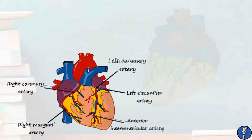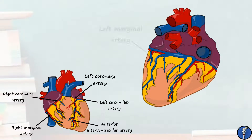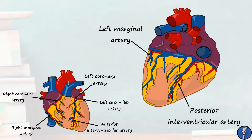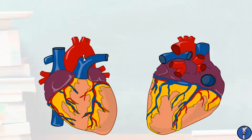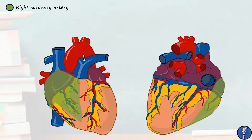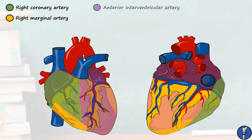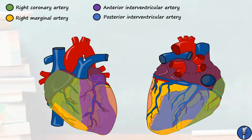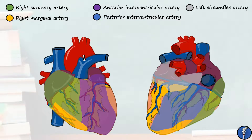Finally, on the diaphragmatic surface, there are two main arteries to note: the left marginal artery, which is the final part of the left coronary artery, and the posterior interventricular artery, which is the final part of the right coronary artery. To recap: the right coronary artery travels in the coronary sulcus to supply the right atrium and ventricle. The right marginal artery branches from this to supply the right ventricle and part of the apex. The anterior interventricular artery supplies the interventricular septum and part of the left and right ventricles. The posterior interventricular artery does the same but on the diaphragmatic surface. The left circumflex supplies part of the left atrium and ventricle, and the left marginal artery supplies part of the left ventricle.